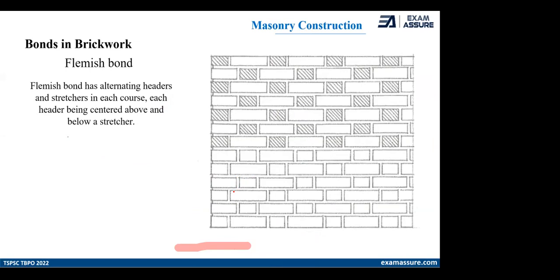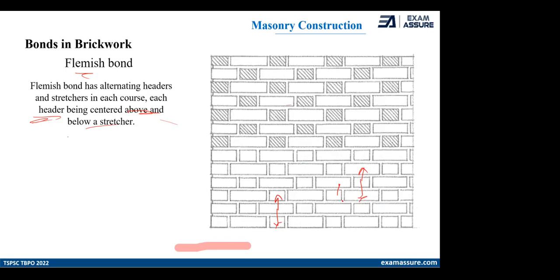Flemish bond: as I have already discussed, it has alternate headers and stretchers in the same bed. In the same bed you have header and stretcher — we look at Flemish in somewhat more detail. If you just see the Flemish bond, each header is centered above and below a stretcher. Take any header — you will be able to see it is centered above and below the stretchers. That is your simple Flemish bond. The improved category of Flemish bond is Flemish cross bond.